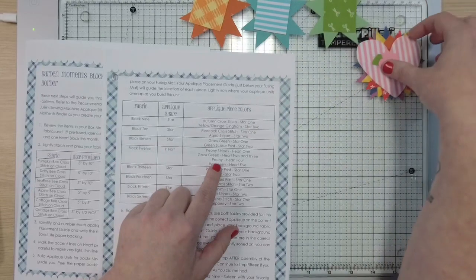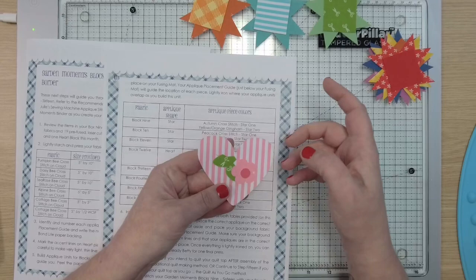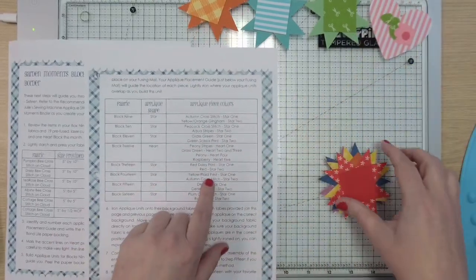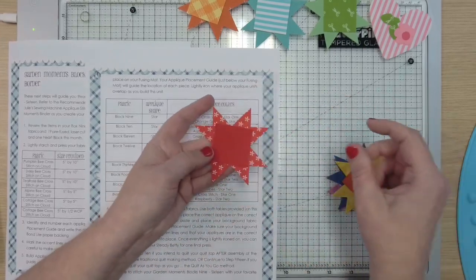Then when you get to block 12 you have a cute little heart with the flowers. You have two leaves, the flower center and the flower itself, and of course the cute pink stripes. Now for 13 you have a red daisy print for the outer part and a red solid for the center.